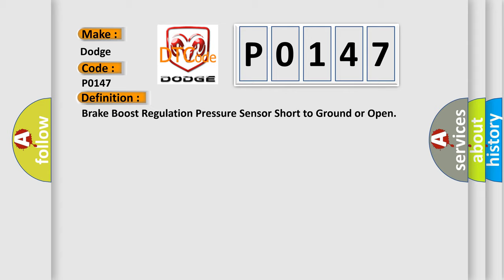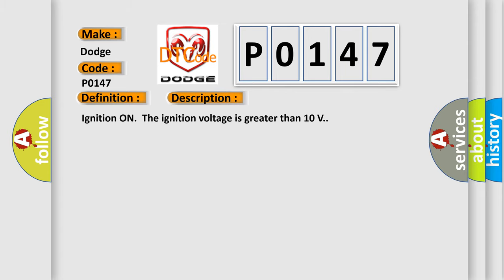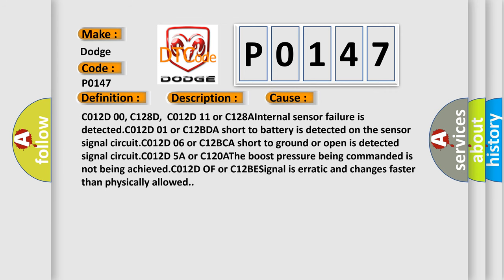Here is a short description of this DTC code. Ignition on: the ignition voltage is greater than 10 volts. This diagnostic error occurs most often in these cases: C012D00 or C128D, C012D11 or C128A — internal sensor failure is detected; C012D01 or C12BDA — short to battery is detected on the sensor signal circuit; C012D06 or C12BCA — short to ground or open is detected on the signal circuit; C012D5A or C120A — the boost pressure being commanded is not being achieved; C012D0F or C12BE — signal is erratic and changes faster than physically allowed.